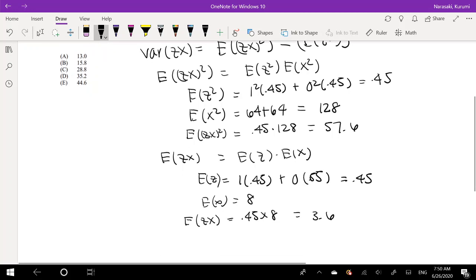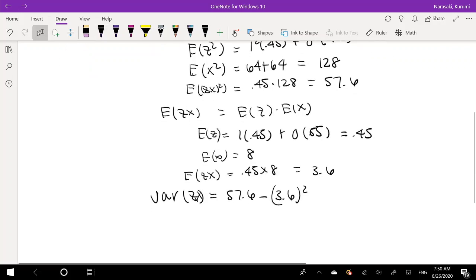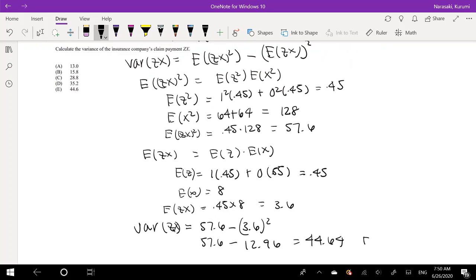Finally, we can find the variance. The variance of ZX equals 57.6 minus 3.6 squared. This value is 12.96. So that's 57.6 minus 12.96, which equals 44.64. This is answer E.